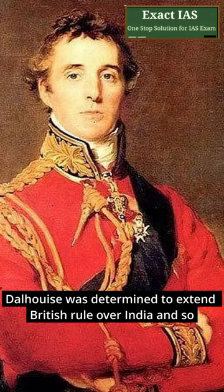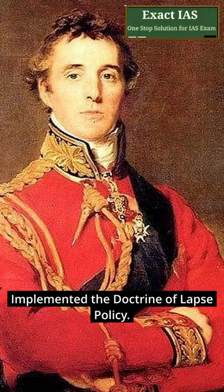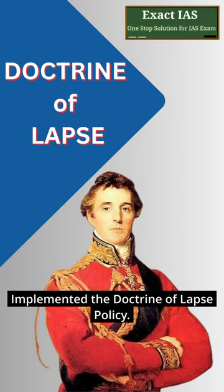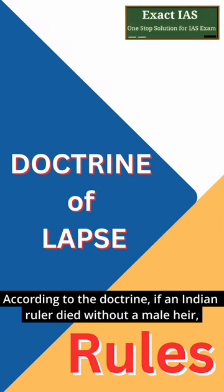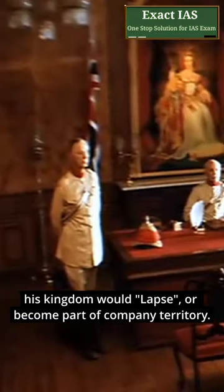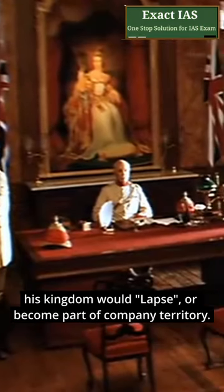Dalhousie was determined to extend British rule over India and so implemented the Doctrine of Lapse policy. According to this doctrine, if an Indian ruler died without a male heir, his kingdom would lapse or become a part of company territory.